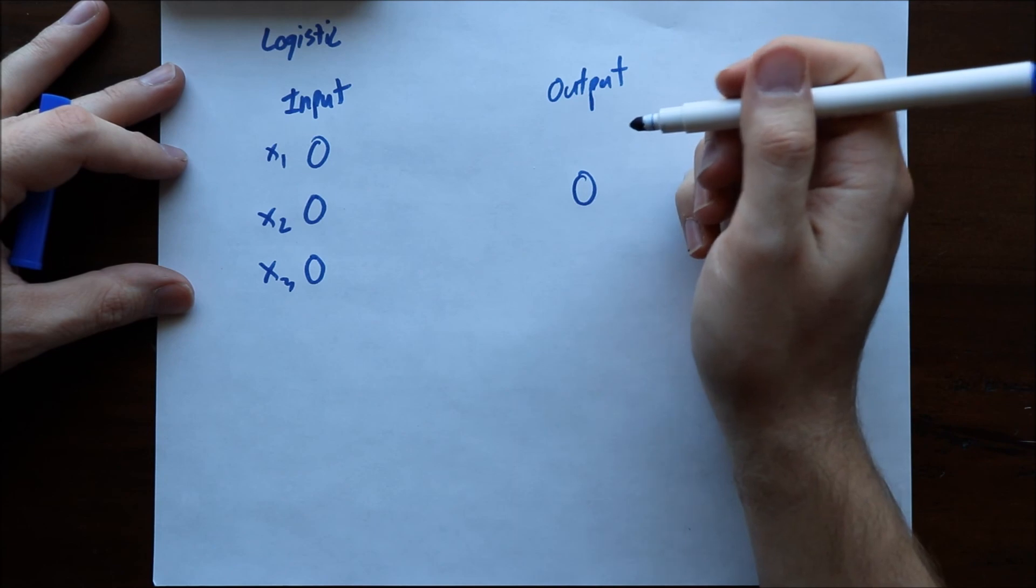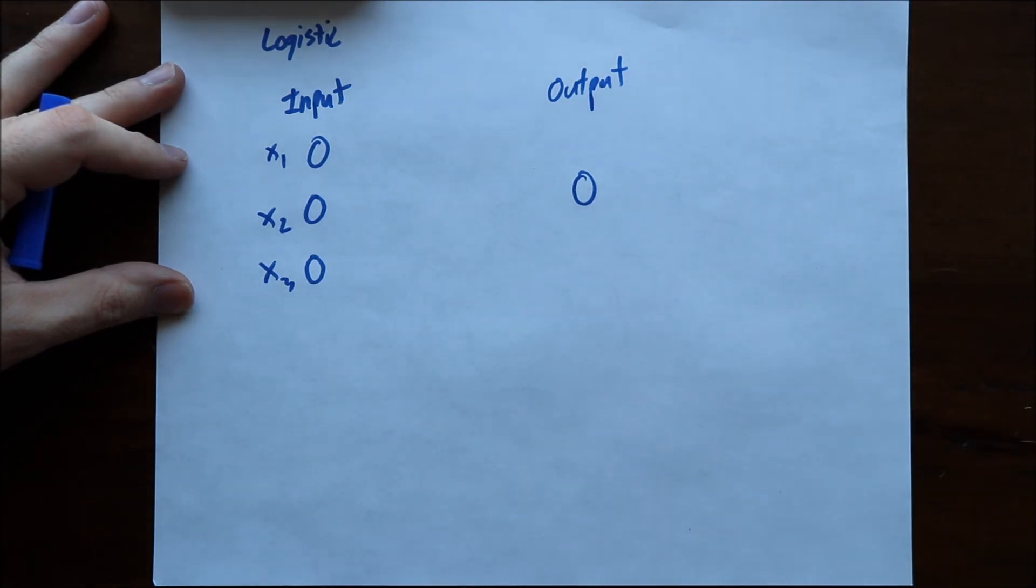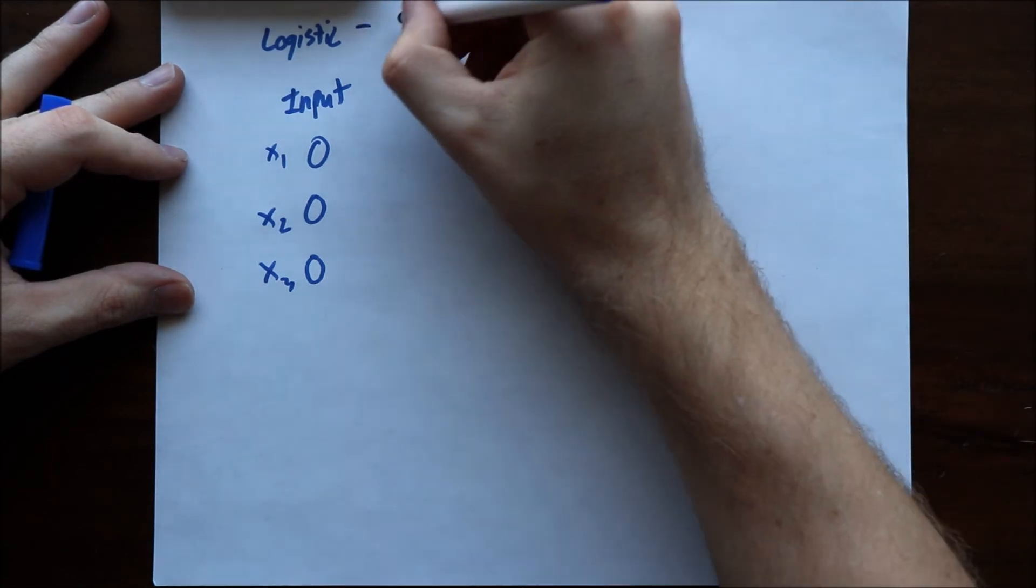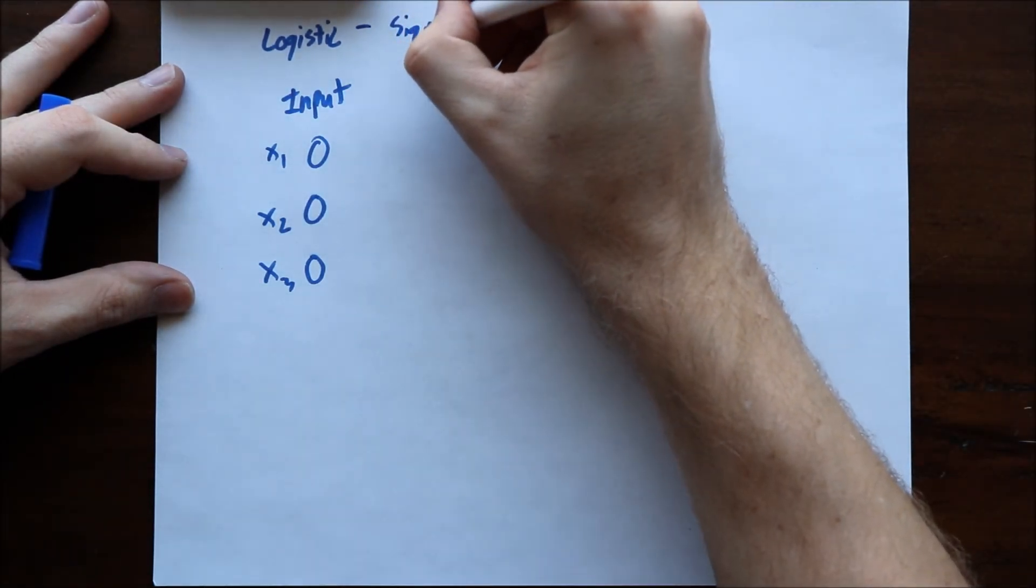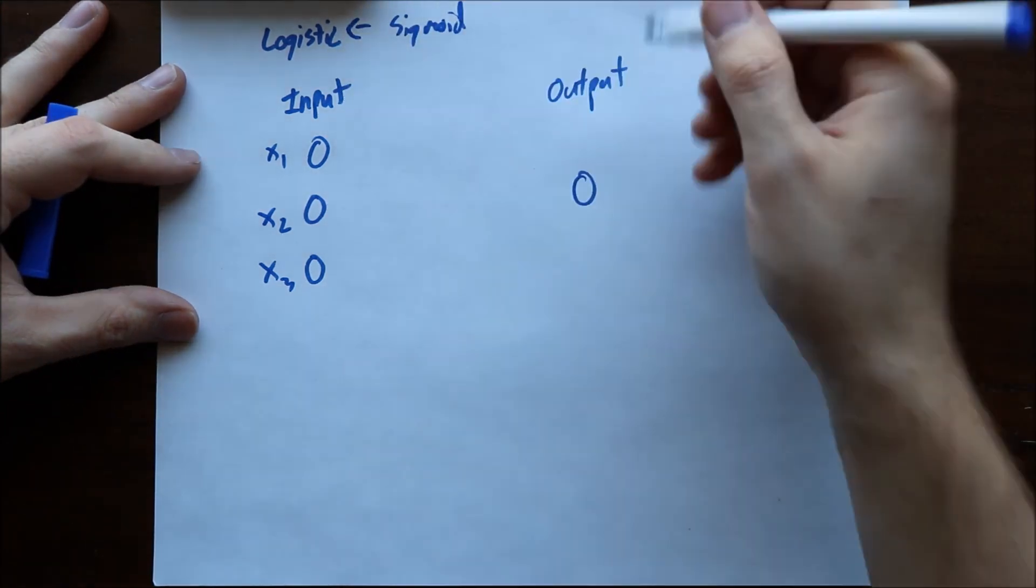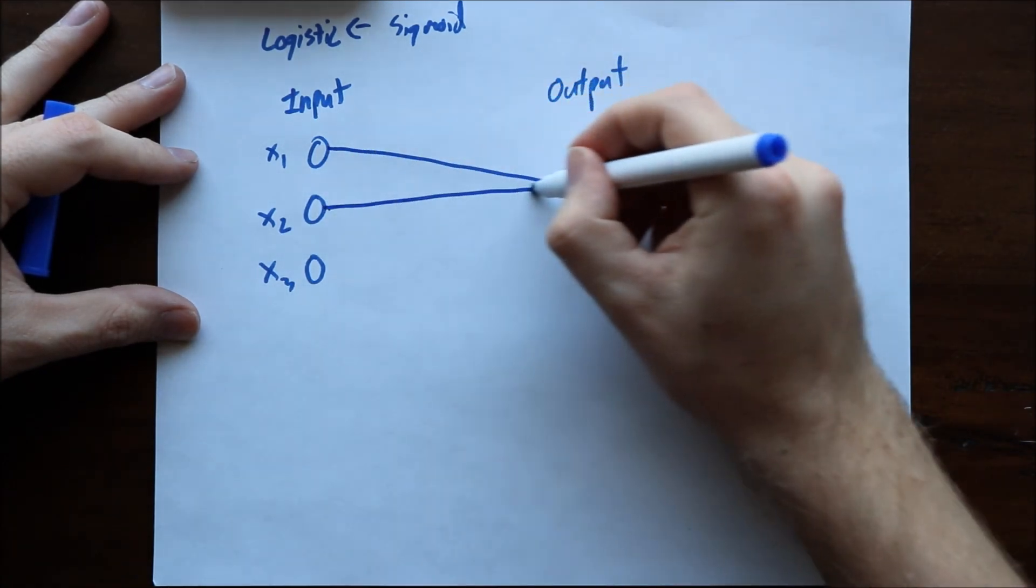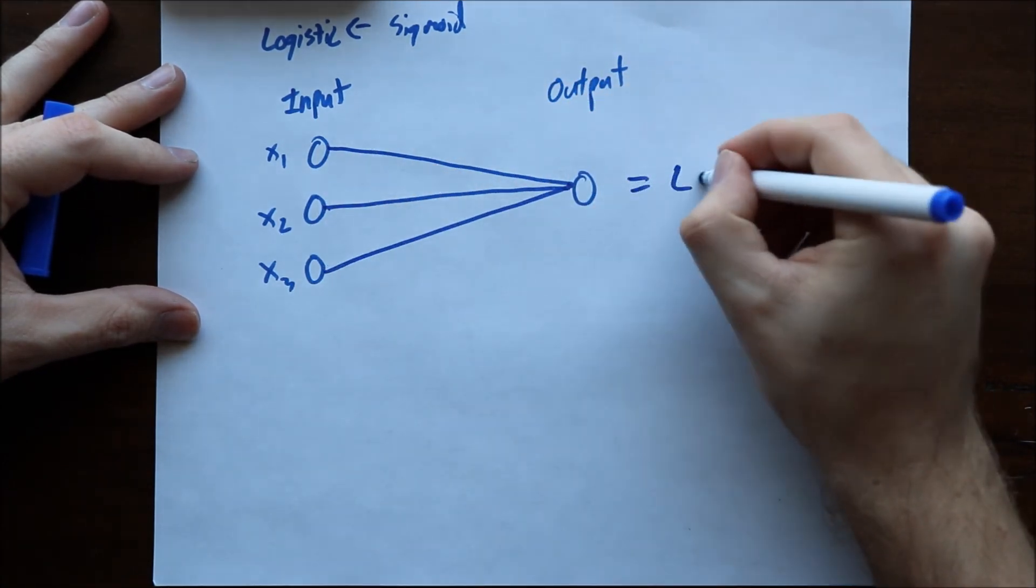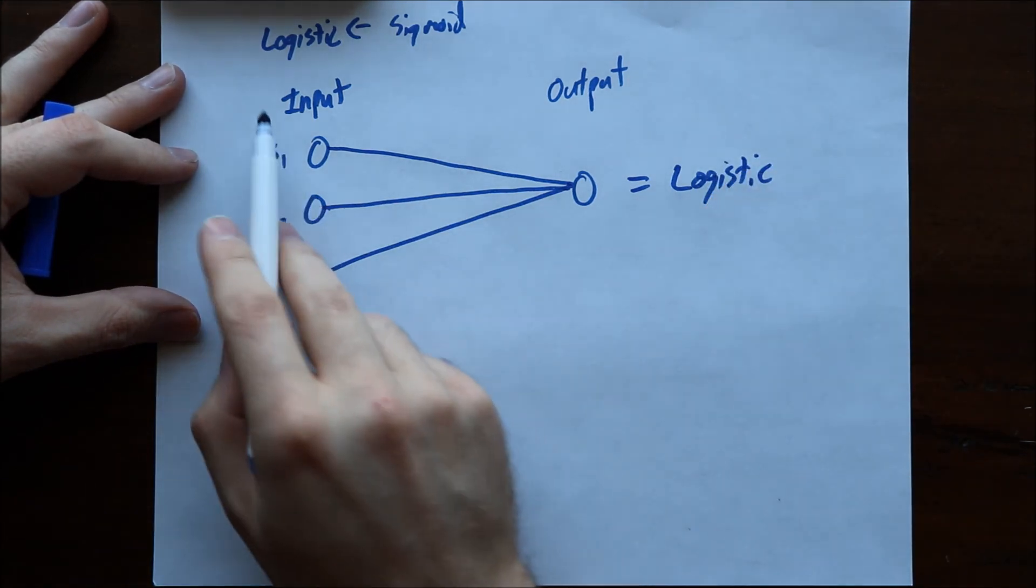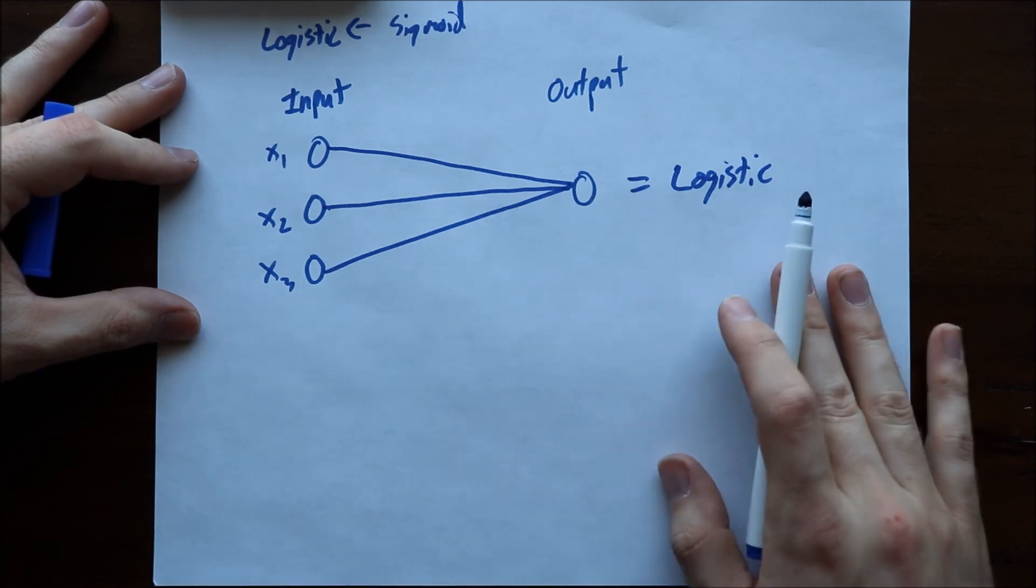There's also an activation function and an activation function just converts the inputs to a non-linear function. Typically we use the sigmoid transformation which is the same as logistic. If you had no hidden layers, so these just went into here, the inputs went to the outputs, this is just a logistic model. Since we're using the activation function of logistic, there are no hidden layers, we end up with a plain logistic model.